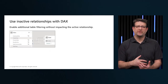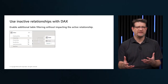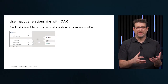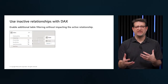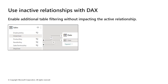Previously, we discussed creating multiple relationships between tables, but only one could be active. In order to leverage the inactive relationships, we're going to use DAX. This is known as role-playing dimension. In this image, we see the sales and date table with two relationships. The active relationship is between order date and date. We can filter by date to calculate the sales. However, if we also wanted to visualize the data by ship date, we need to use DAX.